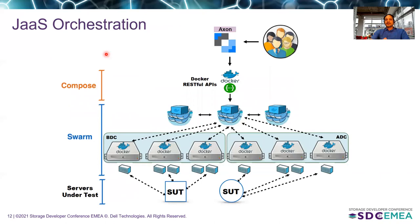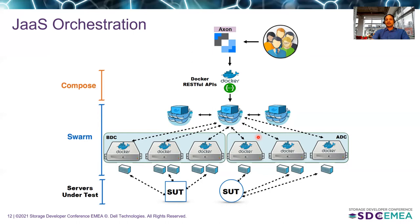This picture shows how we can scale the solution across regions and labs without deploying the solution everywhere. When a user submits a job via Axon, the Docker manager orchestrates containers on specific geolocated load generators within the Docker cluster. For example, we have three load generators in Bangalore lab and three in Austin lab. Based on user request, containers are placed on the appropriate load generators so that traffic between the server and load generator stays within the lab and does not run across the WAN. Geotagging the nodes ensures better system utilization.